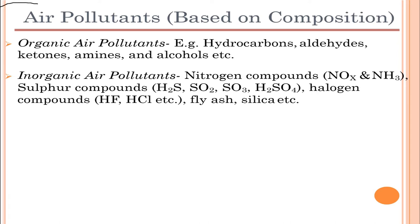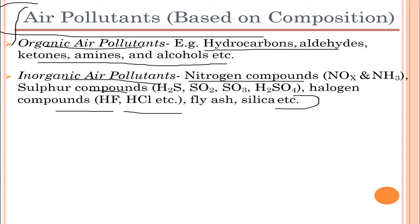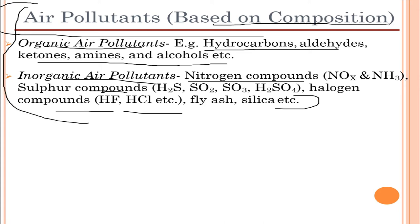Air pollutants can also be classified based on their composition. Organic air pollutants include hydrocarbons, aldehydes, ketones, amines, and alcohols. Inorganic air pollutants include nitrogen compounds, sulfur compounds, halogen compounds, fly ash, and silica.